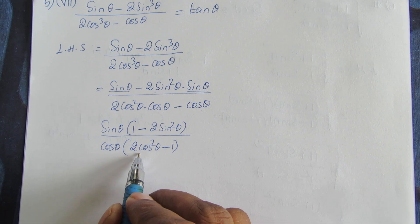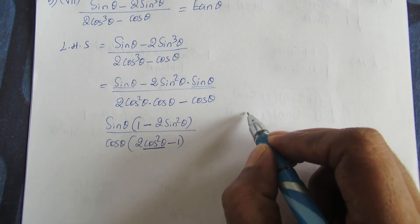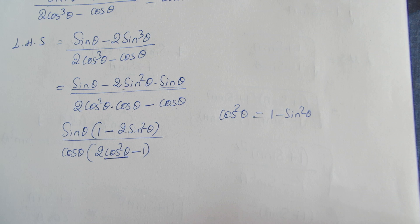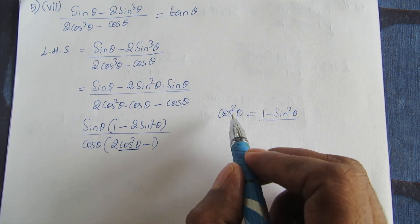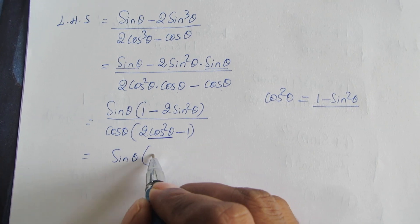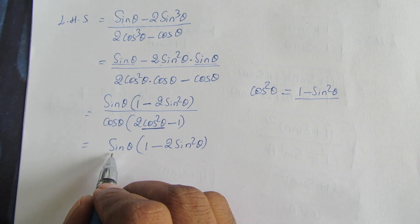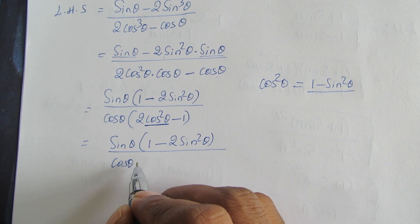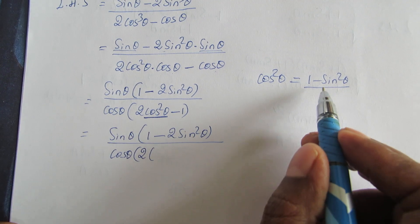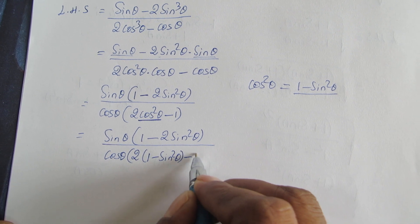Now we know the identity cos square theta equals 1 minus sin square theta. We apply this value for cos square theta. So we get sin theta into 1 minus 2 sin square theta, divided by cos theta into 2 times (1 minus sin square theta) minus 1.